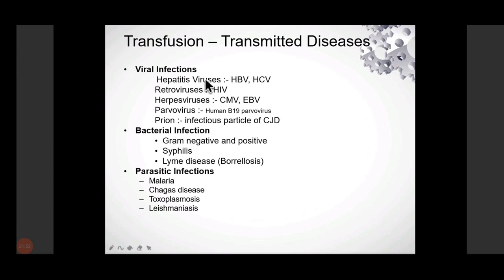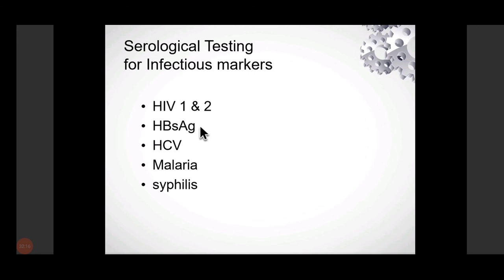Now we can discuss transfusion-transmitted infections — the most common infections transferable by blood transfusion. These include HBV, HCV, retroviruses, CMV, EBV, parvovirus, and prion diseases. In our lab, routine screening includes HIV, HBsAg antigen, HCV, malaria, and syphilis before blood transfusion. These are important examination questions.